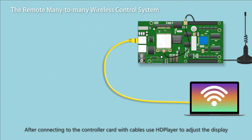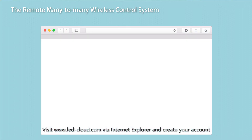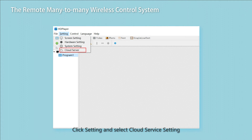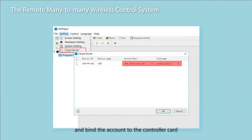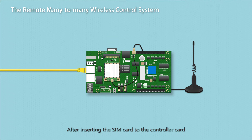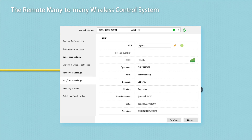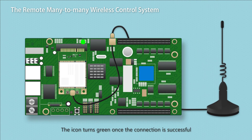After connecting to the controller card with cables, use HD Player to adjust the display. Visit www.led.cloud.com via Internet Explorer and create your account. Open HD Player on the computer, click Settings and select Cloud Service Setting. Enter the password 168 and bind the account to the controller card. After inserting the SIM card, you can check the connection status via HD Player — the icon turns green once the connection is successful.